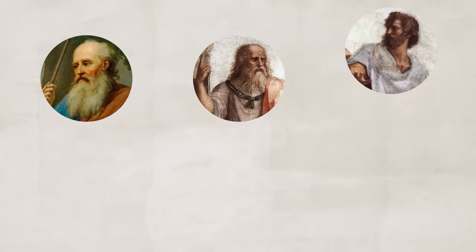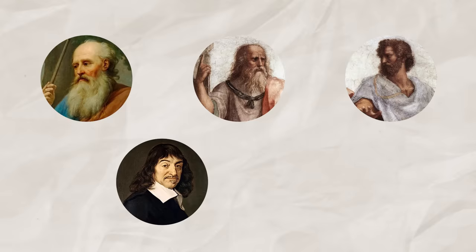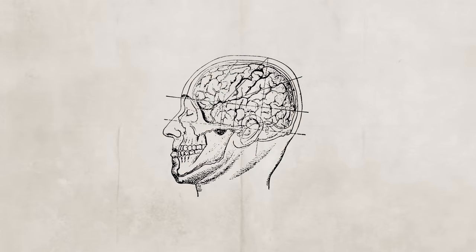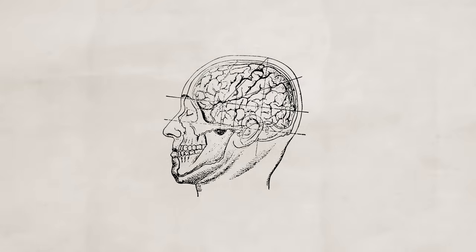Psychology has been an ever-evolving field of study. We can see its roots date all the way back to the ancient Greeks. Philosophers such as Socrates, Aristotle, Plato, Rene Descartes, and John Locke looked at the concept of the mind and how it works. Where does knowledge come from? Are we born as a blank slate, or are we preloaded with information? This line of questioning led to many deep philosophical debates that are still going on today.